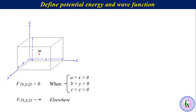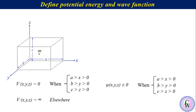The wave function associated with the particle is non-zero inside the box while zero at the wall and outside the box. That is, psi(x,y,z) is non-zero when x is between 0 to a, y is between 0 to b, and z is between 0 to c, and it is equal to zero elsewhere.